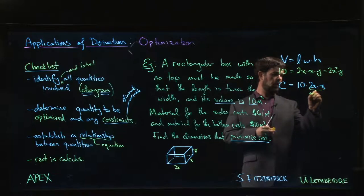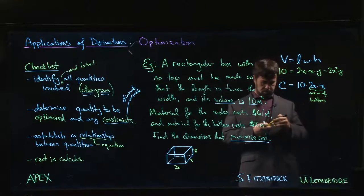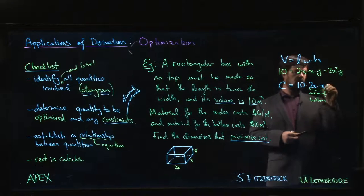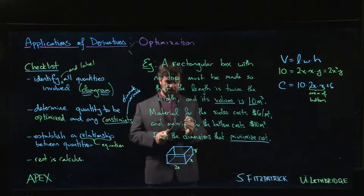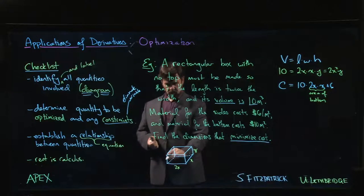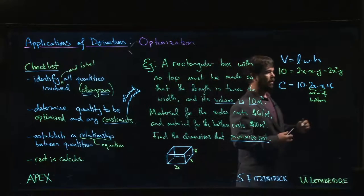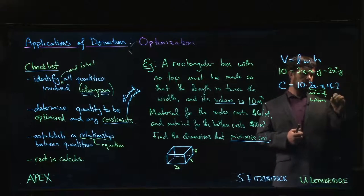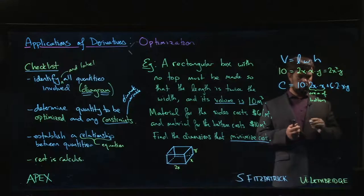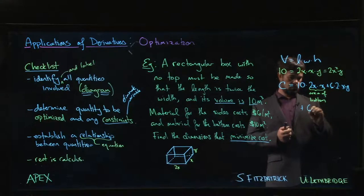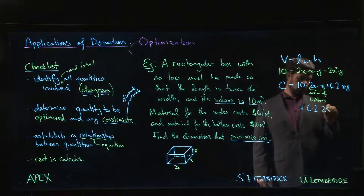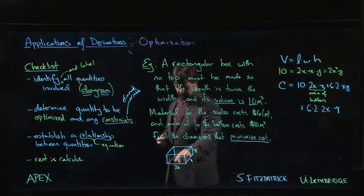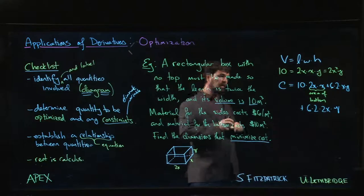So this is the area of the bottom—there's only one bottom. Now sides cost six dollars per square meter, but there's two different kinds of sides. So there are these two sides, this one and this one, which have area x times y. So there are two of those, area xy. And there are another two that have an area of 2x times y—the front and the back, 2x times y.